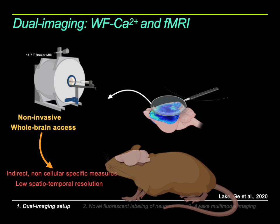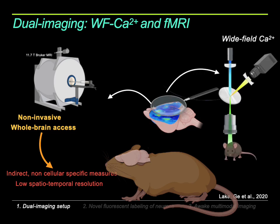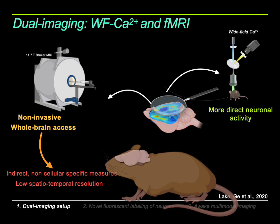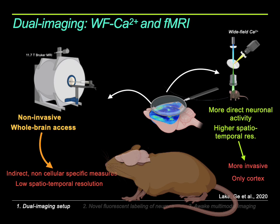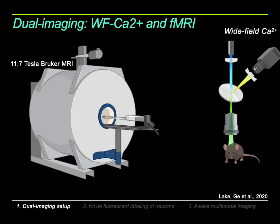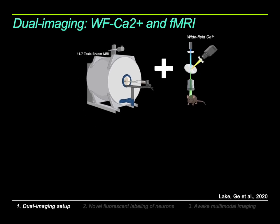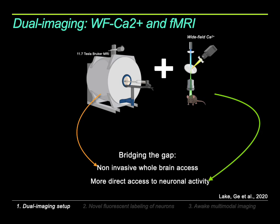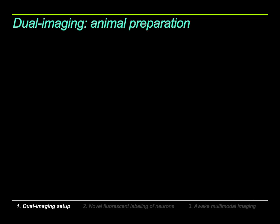This is why we combine fMRI with wide-field calcium imaging, which allows more direct access to neuronal activity and has much higher spatial-temporal resolution. Although calcium imaging is an invasive technology and therefore not yet applicable to humans, the idea is to combine these two modalities to bridge the gap: having a more invasive but direct access to the brain on one end, and something translatable to the clinic on the other.